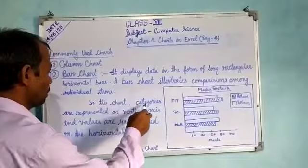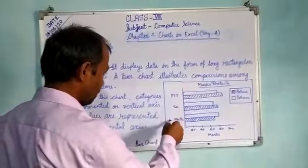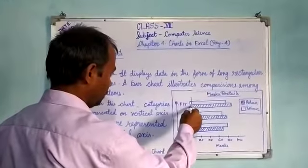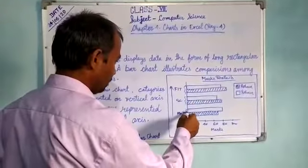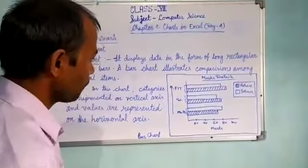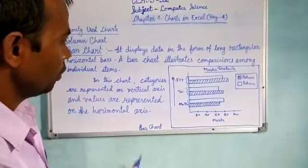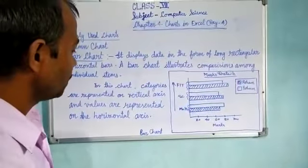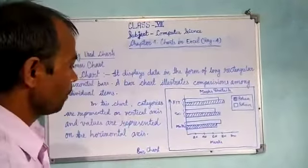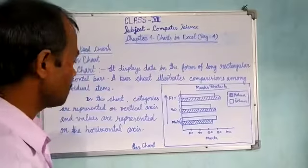In a bar chart, categories are represented on the vertical axis — the y-axis. This is the category axis. Here we have three categories: Math, Science, and FIT sections, and these are represented on the vertical base. This is also a difference between the column chart and the bar chart — in column charts the category axis is on the x-axis, but in bar charts the category axis is on the y-axis.